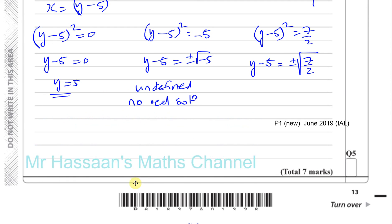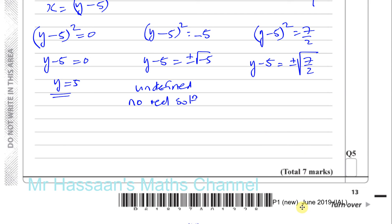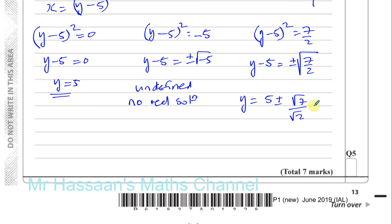It's always best to rationalize the denominator and write things in simplest form. The square root of 7 over 2 is root 7 over root 2. Multiplying numerator and denominator by root 2 rationalizes the denominator, giving root 14 over 2, which is one half times root 14. So y equals 5 plus or minus one half root 14.